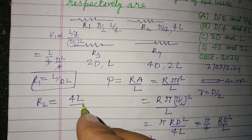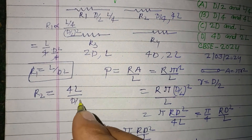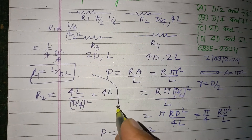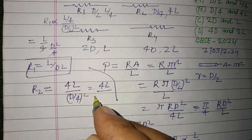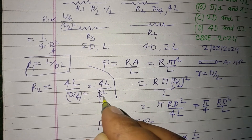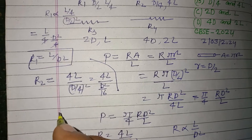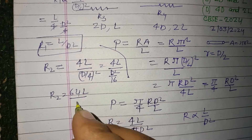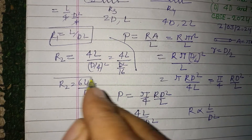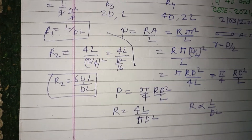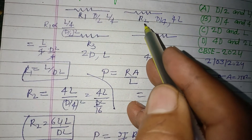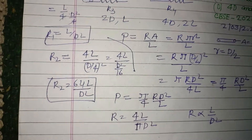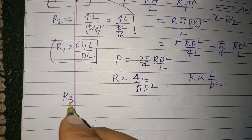For Wire 2: R2 ∝ L/D², where L = 4L and D = D/4. So R2 ∝ 4L / (D/4)² = 4L / (D²/16) = 64L/D².